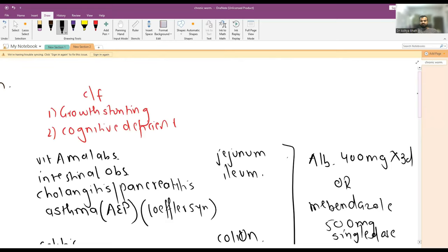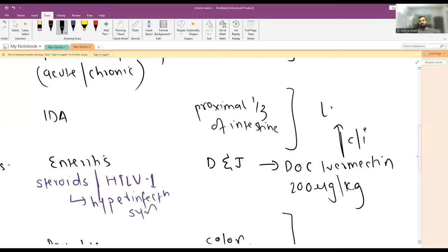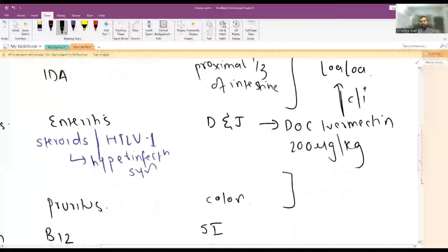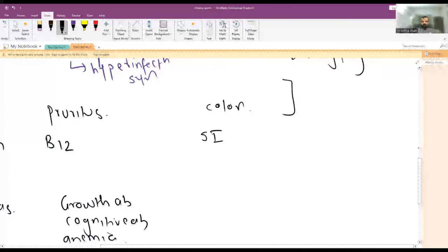For Strongyloides, the drug of choice is ivermectin 200 micrograms per kg per day. But ivermectin is contraindicated in patients who are infected with Loa loa, because if there is presence of Loa loa in the body and you give ivermectin, the patient will deteriorate and face encephalitis. Make sure that Loa loa is not there, or else give albendazole in those patients.